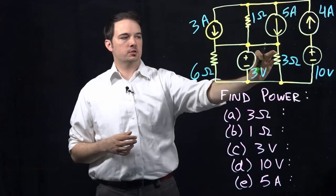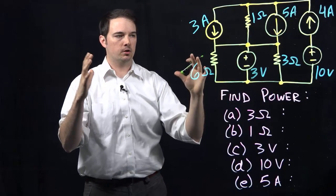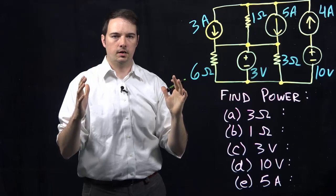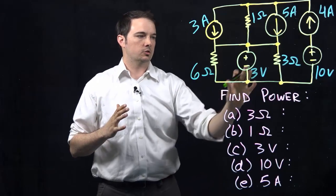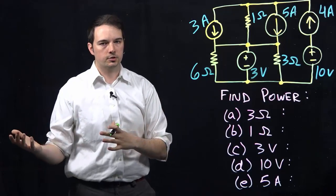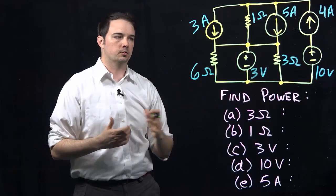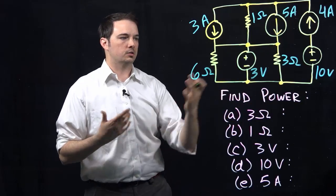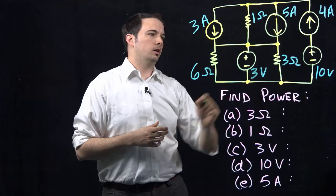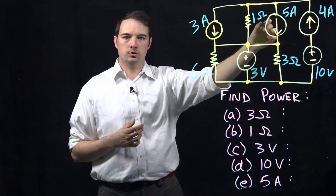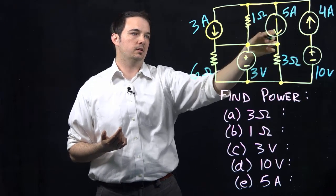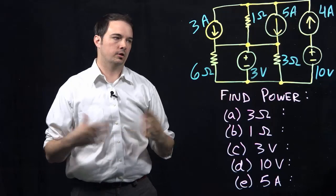Sometimes you might get a little bombarded by seeing a lot of various elements and feel confused as to where to start. My recommendation is to look at what's the easiest mode to work at first. Looking at the 3 ohm resistor, in order to figure out power I need to know something about the voltage or the current — the voltage across the resistor or the current through the resistor. Do I know what current is flowing through my 3 ohm resistor? Well, I have a 5 amp current source here, but I don't really know the current flowing through this resistor because that 5 amps is going to be divided between this branch and some going into this branch. So I don't really know the current.